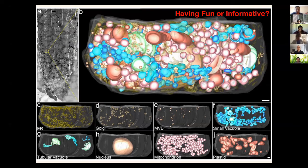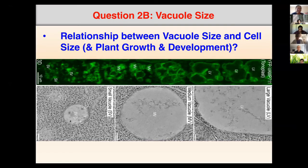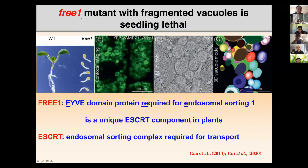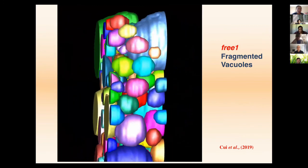The second question: in cells with large vacuoles, the cell itself is normally larger; in cells with small vacuoles, the cell size is smaller. So which controls which — does vacuole size control cell size, or does cell size control vacuole size? We do know that if you knock out certain genes — for example, a gene related to the ESCRT machinery — the mutant vacuoles cannot reach normal size and remain fragmented, resulting in smaller cells.